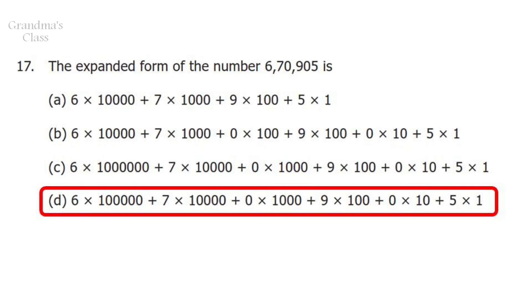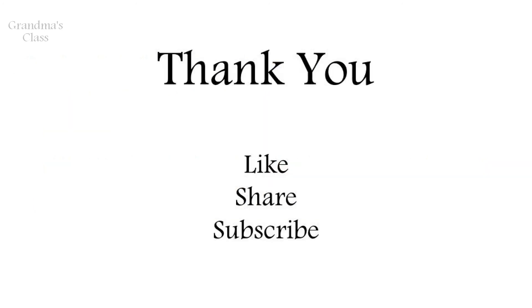Your last question of the exercise. Question 17: The expanded form of the given number 6 lakh 70,905 is represented in the correct expanded form in option D, which is 6 into 1 lakh plus 70 into 10,000 plus 0 into 1000 plus 9 into 100 plus 0 into 10 plus 5 into 1. With this we finish Exercise 1.1 for the topic Numbers.